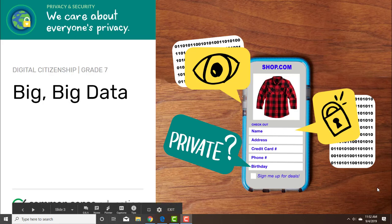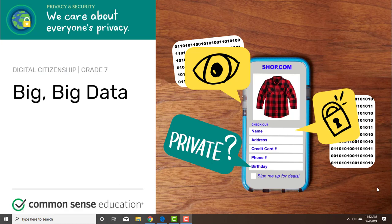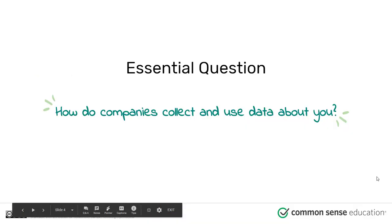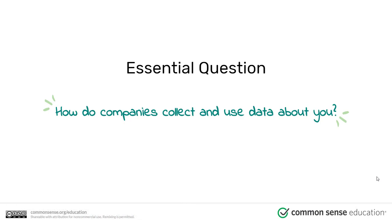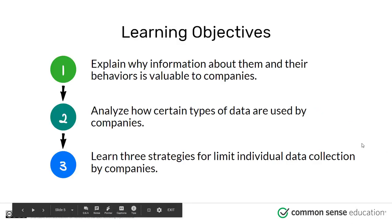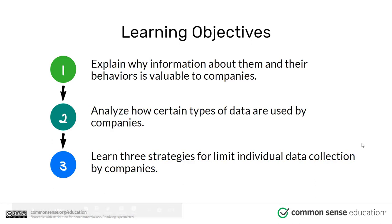Hello! In this digital citizenship lesson we are going to be looking at what data people collect from you as a way of customizing their products. In this lesson, called 'Big Big Data,' the driving question is: how do companies collect and use data about you? The learning objectives are to explain why information about you and your behaviors is valuable to companies, and to analyze how certain types of data are used by companies.